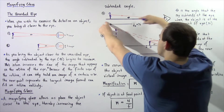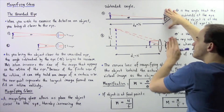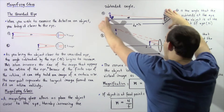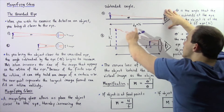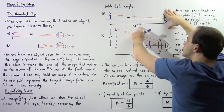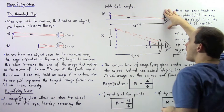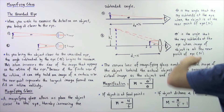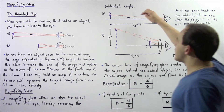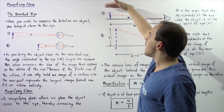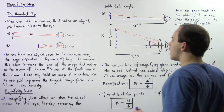This line is the principal axis, and this is our unaided eye. In diagram A, our object is placed exactly at the near point of the eye, so the object distance is equal to the near point distance given by capital N. We define the angle theta as the angle that the ray subtends at the eye when the object is exactly at the near point. This ray of light essentially bounces off the topmost region of our object.